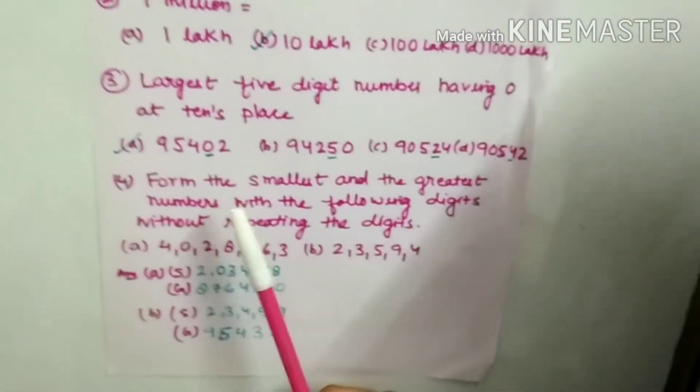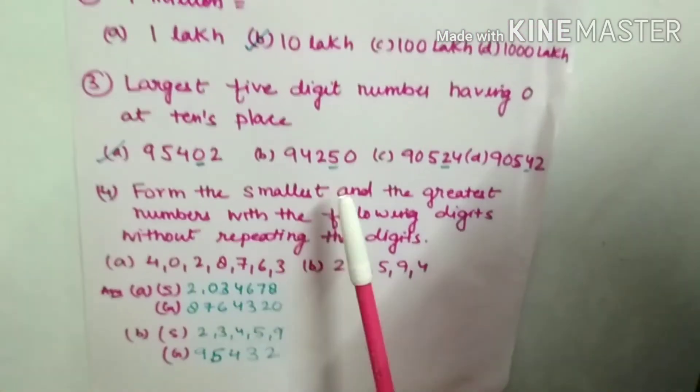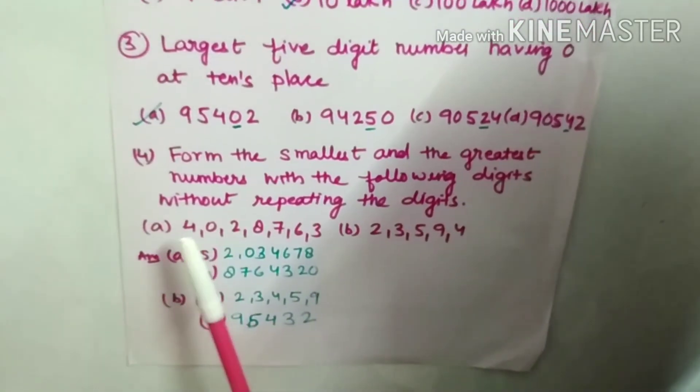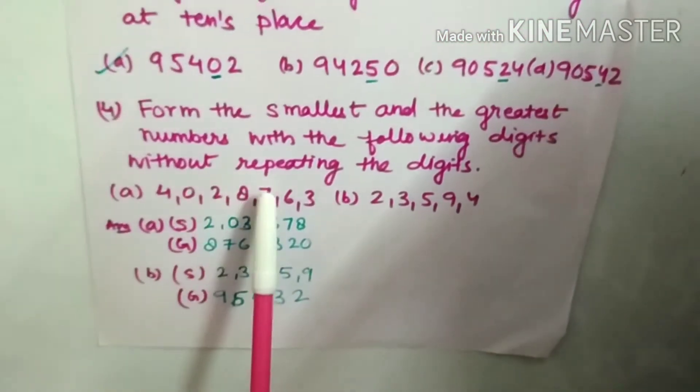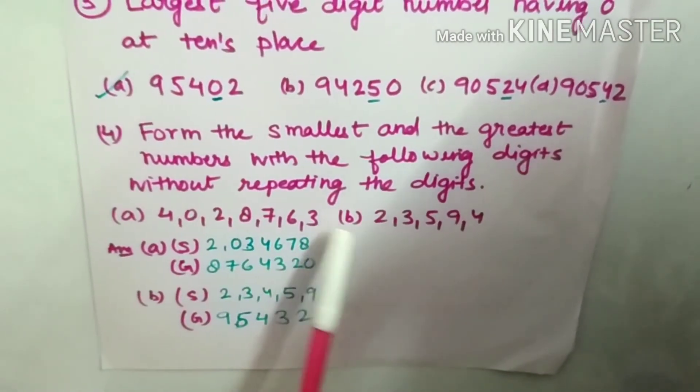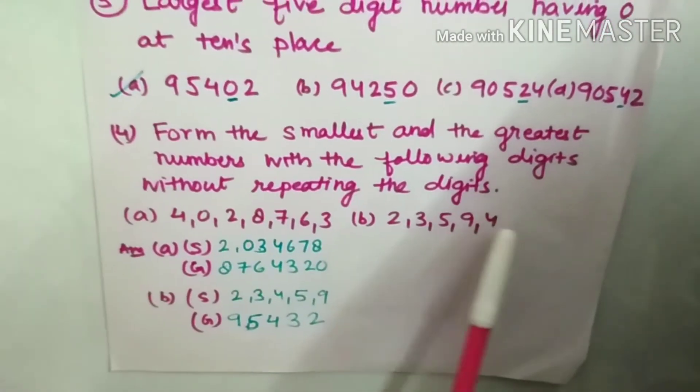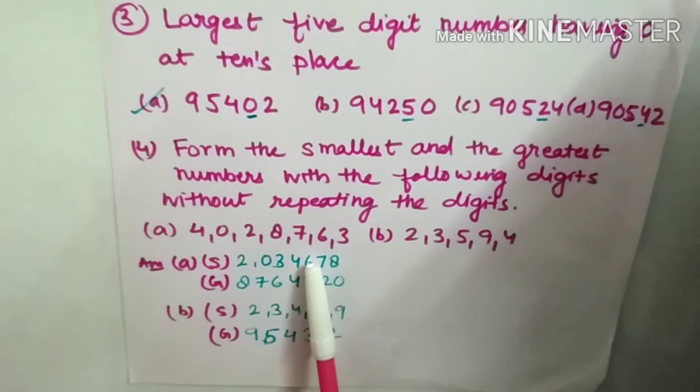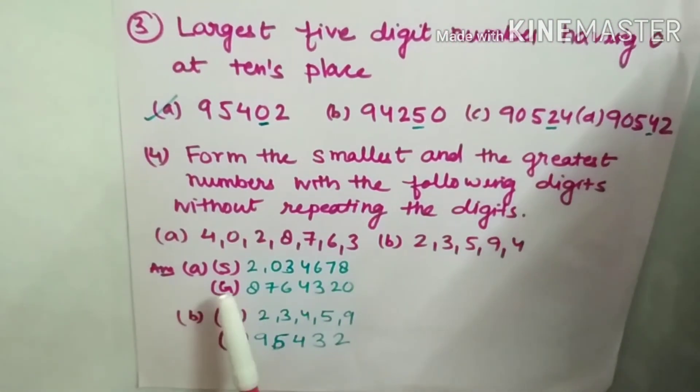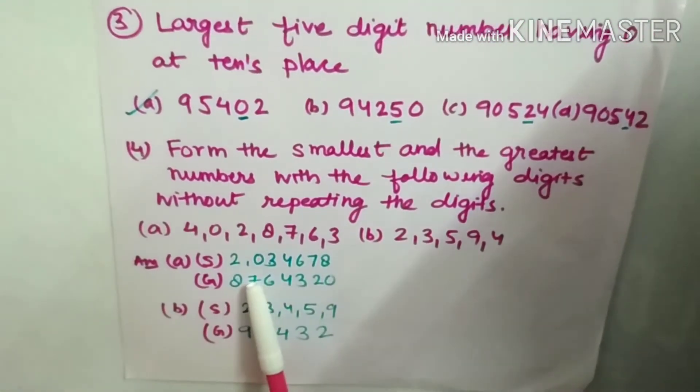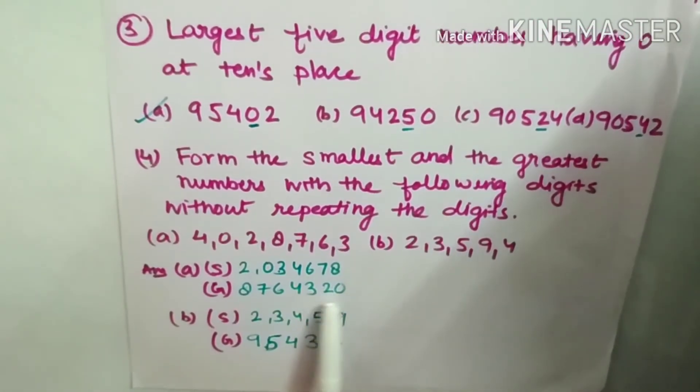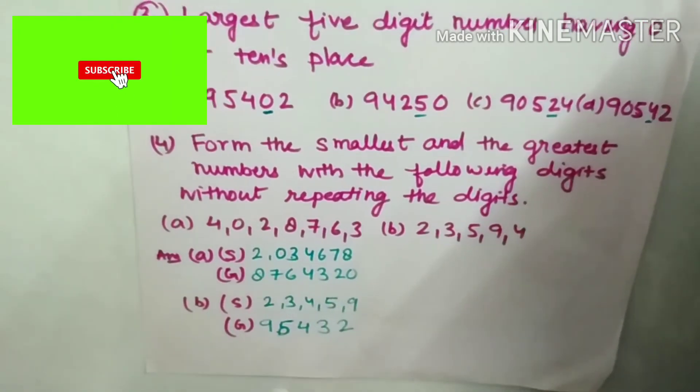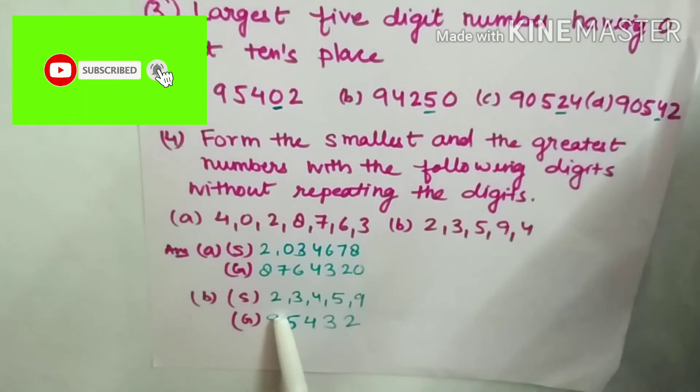Fourth: form the smallest and greatest number with the following digits without repeating the digits. A: 4, 0, 2, 8, 7, 6, 3. B: 2, 3, 5, 9, 4. Answer A: smallest 2034678, greatest 8764320. B: smallest 23459.